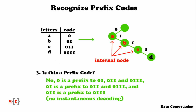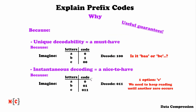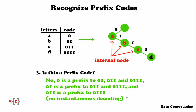Finally, 011 is a prefix to 0111. So there are a lot of prefixes here. If we draw the binary tree, we see that A is an internal node, B is an internal node, and C is also an internal node — the only codeword that is not an internal node is 0111. So this clearly is not a prefix code because we have three internal nodes and there shouldn't be any. There is also no instantaneous decoding, because this code really resembles the earlier example, and for exactly the same reason, there cannot be any instantaneous decoding.